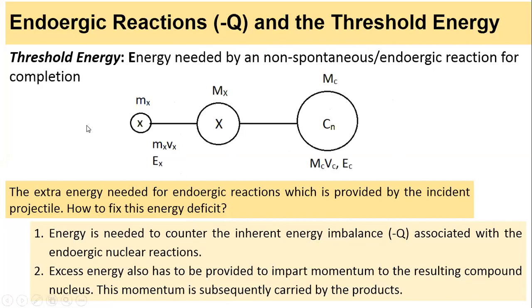First, let's look at the definition of threshold energy. This is the energy needed by a non-spontaneous or endoergic reaction for its completion, because endoergic reactions are non-spontaneous and exoergic reactions are spontaneous in nature. For an endoergic reaction, the Q value will always be negative, so this extra energy is needed, and it is indicated by the minus sign showing an energy deficit.